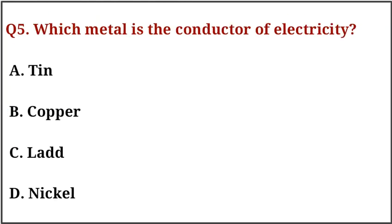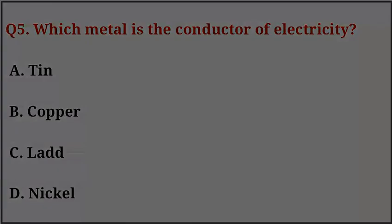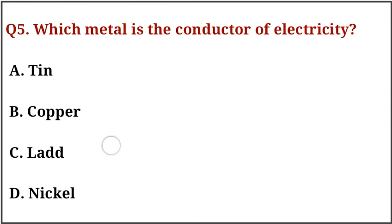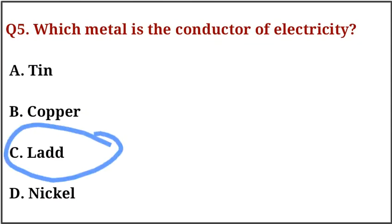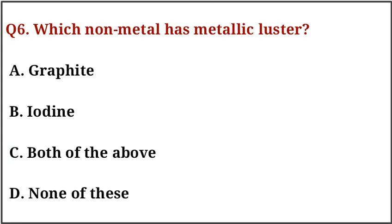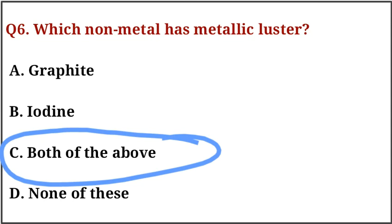Question number five: which metal is the conductor of electricity? The correct answer is option number two, that is lead. Question number six: which non-metal has metallic luster? The correct answer is option number C, that is both A and B, that is graphite and iodine.